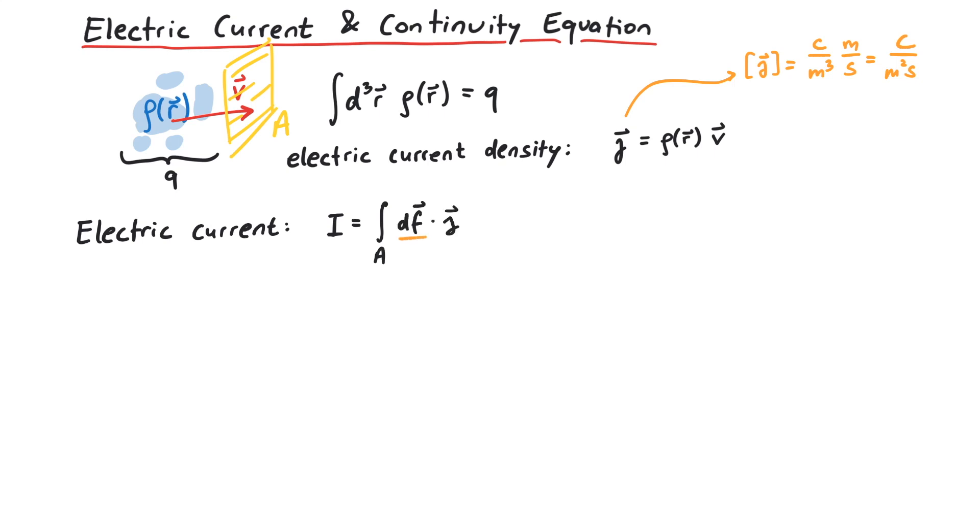Here, df is a tiny area element pointing outwards of some volume. If we check the dimensions, I has Coulombs over seconds, which is the usual amp.